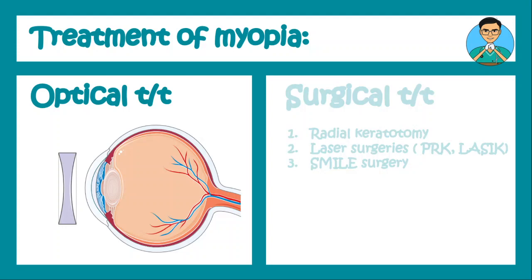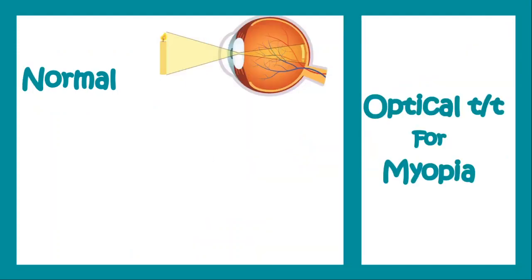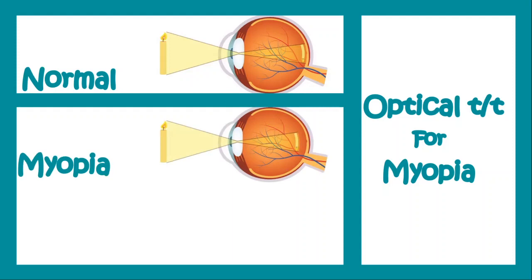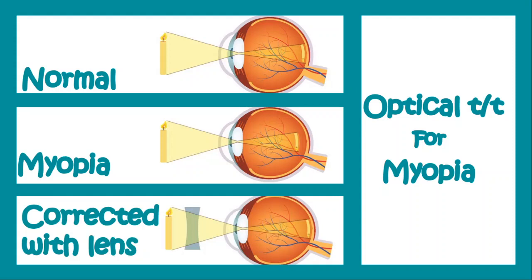Optical treatment of myopia can be done by simply putting a concave lens in front of the eye. In a normal eyeball, light rays converge over the retina to form a clear image, but in myopia the image forms before the retina, giving a blurred image over the retina. By placing a concave lens in front of the eye we can mimic the normal condition and solve the problem of myopia. This concave lens can be in the form of spectacles or a contact lens.